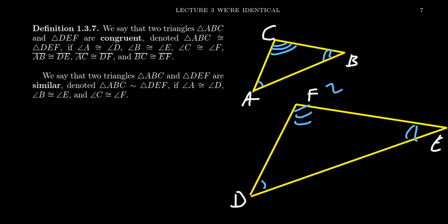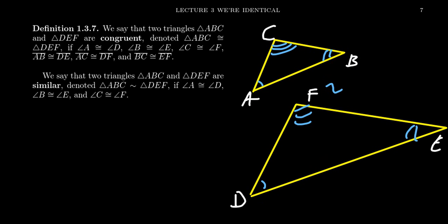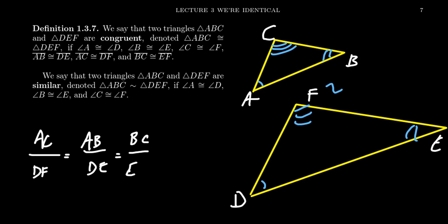Even though the side lengths are bigger, the triangles still have the same basic shape, because the shape of a triangle is determined by its angles, not by the side lengths. When it comes to similar triangles, corresponding parts are proportional. So AC and DF are proportional to each other — the factor by which DE is larger than AB is the same factor for AC as well. If you take AC divided by DF, this equals AB divided by DE, which equals BC divided by EF, and these are all equal to some constant — maybe the triangle is twice as big, three times as big, or one and a half times as big.